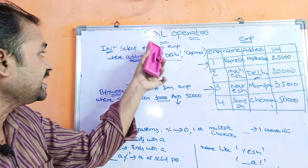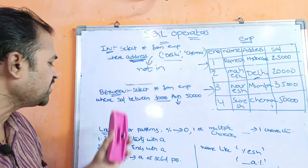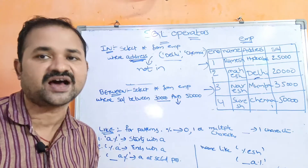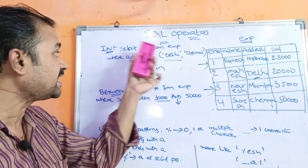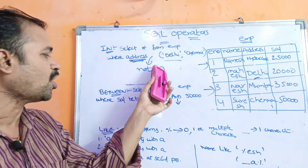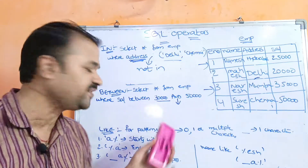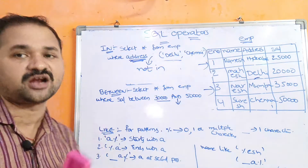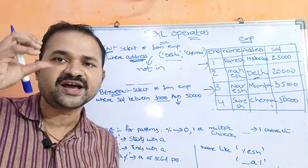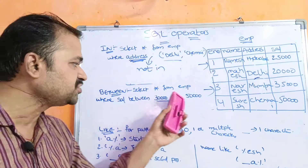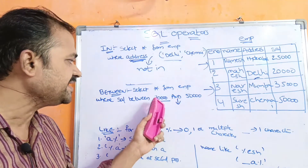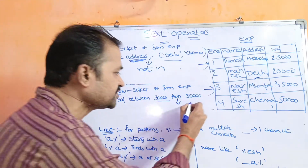The IN, BETWEEN, and LIKE operators are used in the WHERE clause. We have the SELECT clause, FROM clause, and WHERE clause. Here we use IN, NOT IN, BETWEEN, NOT BETWEEN, and LIKE in the WHERE clause. When using BETWEEN, we must also use the AND keyword. So: WHERE salary BETWEEN 30,000 AND 50,000.